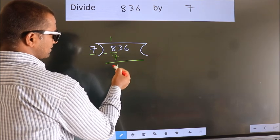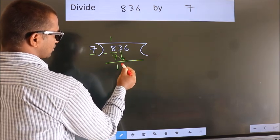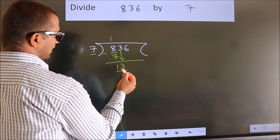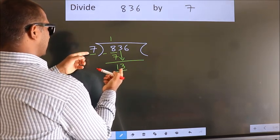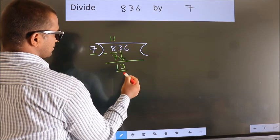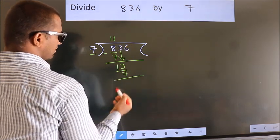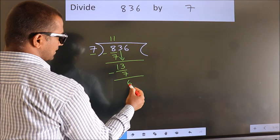After this, bring down the beside number. So 3 down. So 13. A number close to 13 in 7 table is 7 once 7. Now we subtract. We get 6.